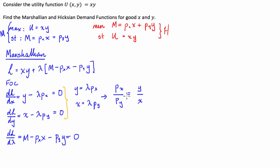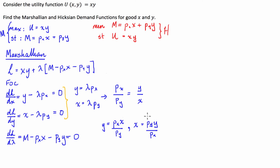We can rearrange this to express each good in terms of the other. So Y is going to be equal to the price of X times X divided by the price of Y, and X is going to be equal to the price of Y times Y over the price of X. To figure out how much of each good we buy, we then substitute these into our income constraint to find the quantity of each good given a particular level of income.